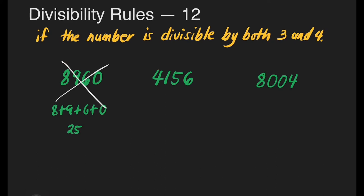Next, number 2, we have 4,156. Let's check if this number is divisible by 3 by adding all the digits. That's 4 plus 1 plus 5 plus 6. 4 plus 1 is 5, plus 5 is 10, plus 6 is 16. Is it divisible by 3? No, it has a remainder. So this number is not divisible by 3. When it is not divisible by both 3 and 4, automatically that number is not divisible by 12.